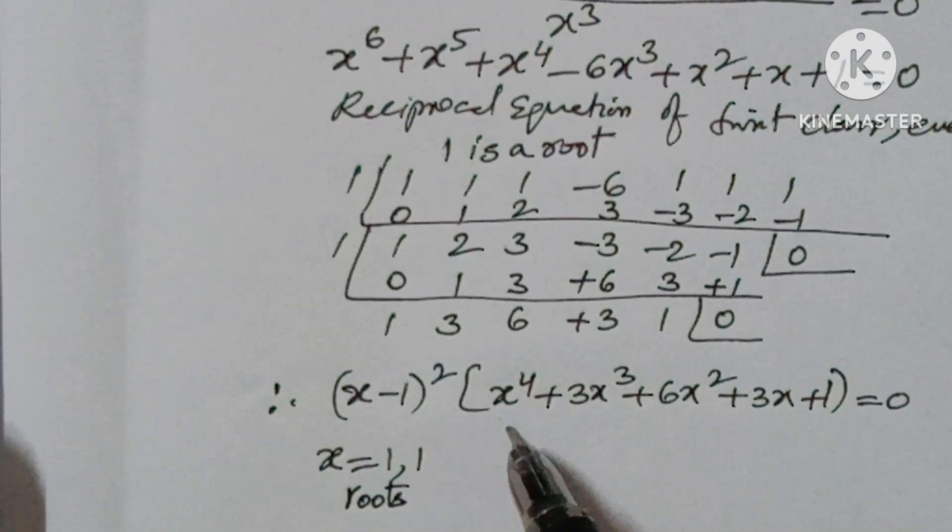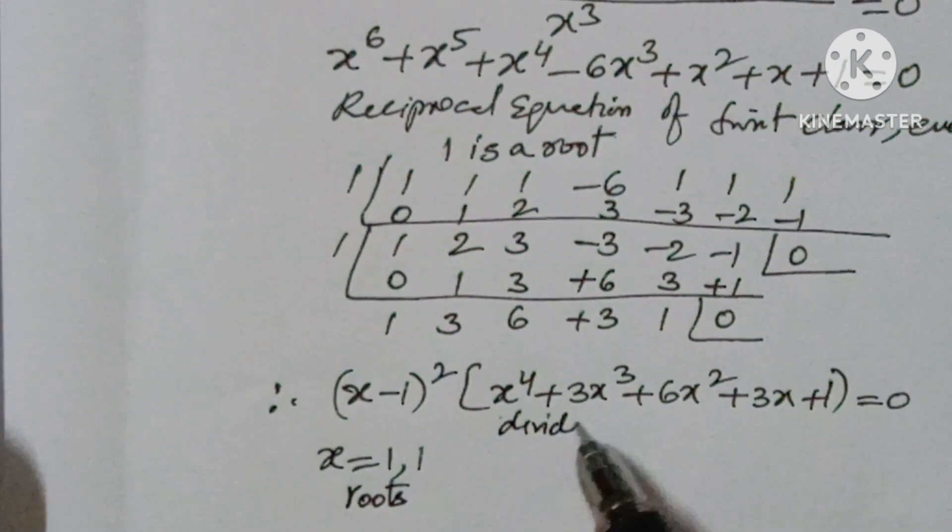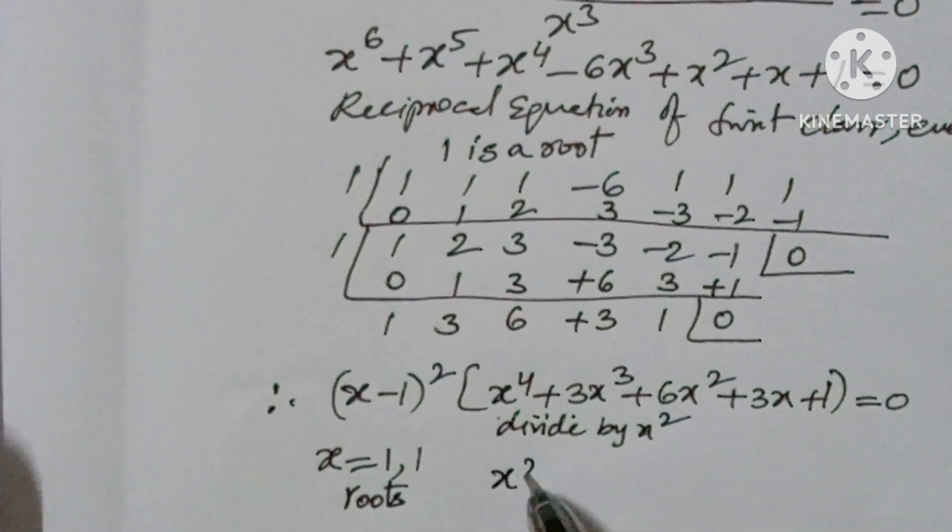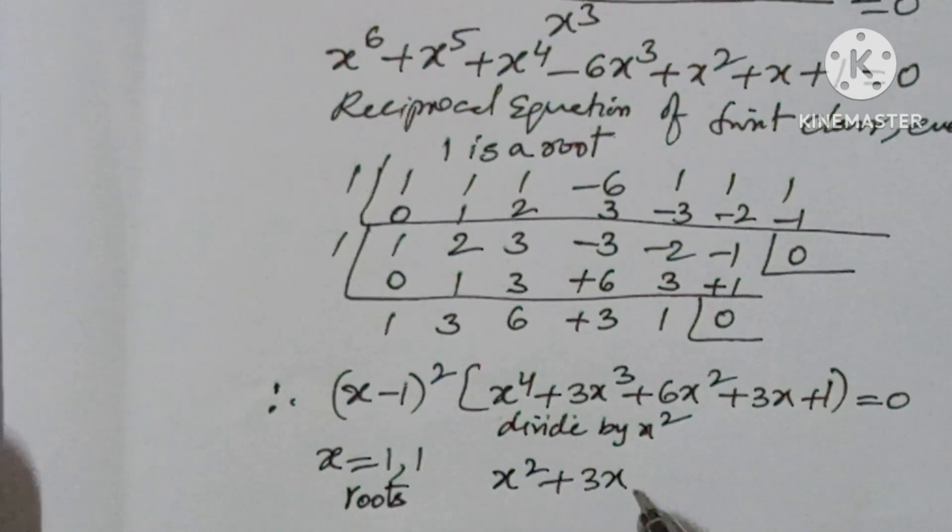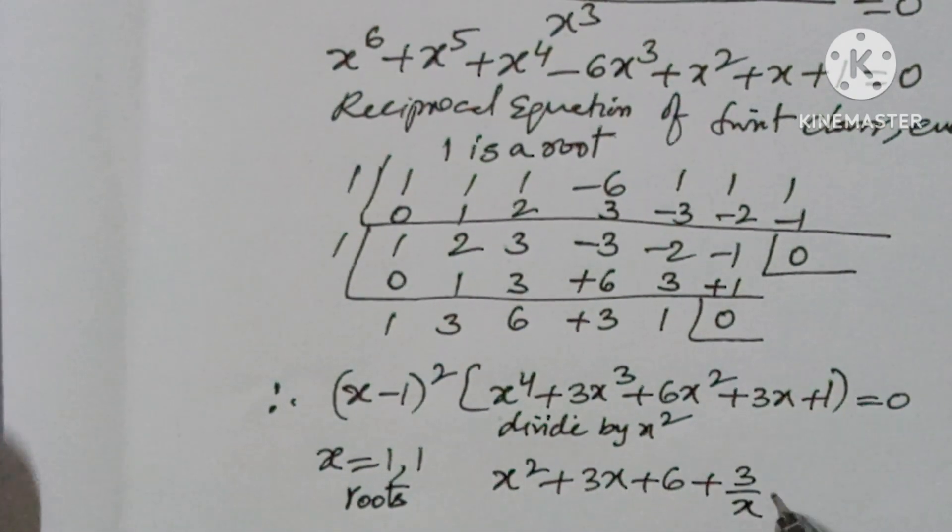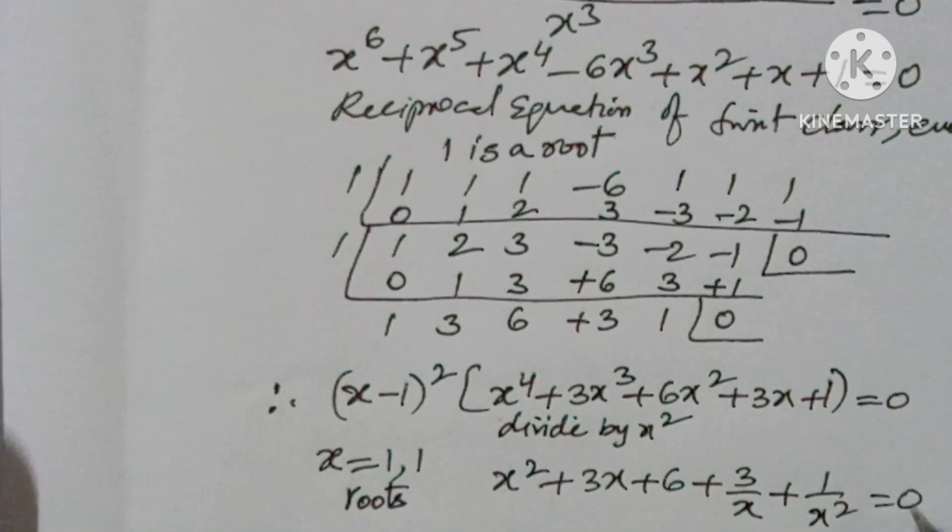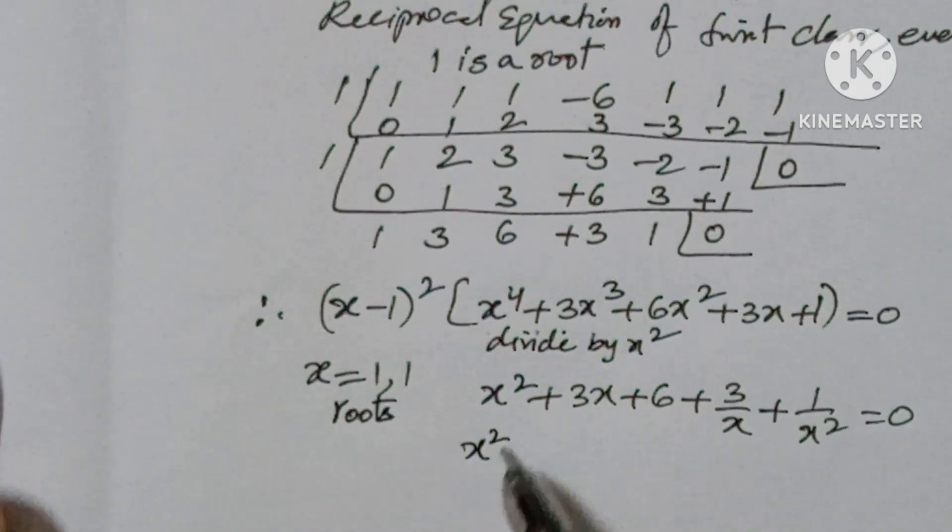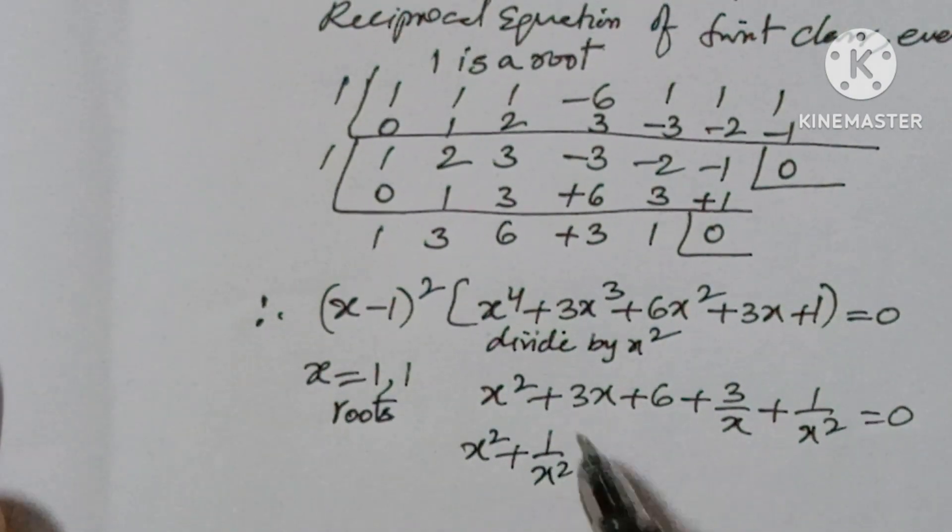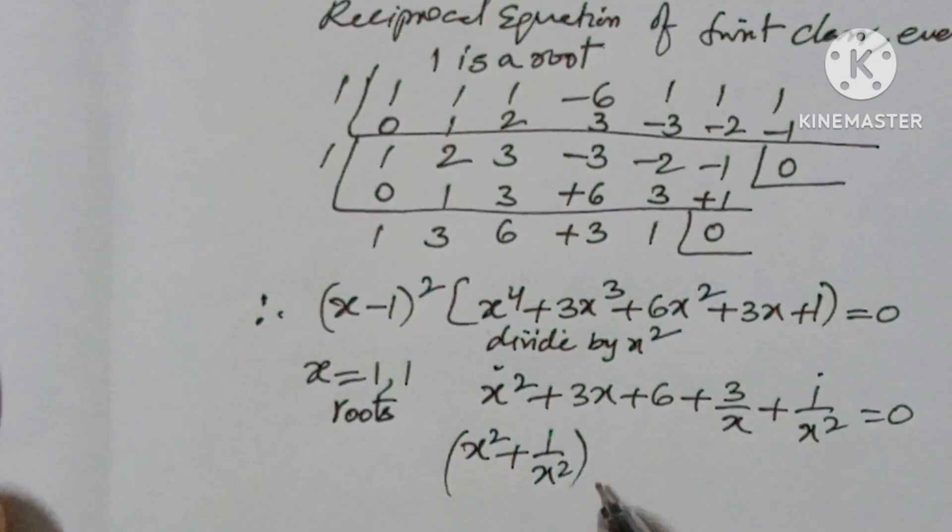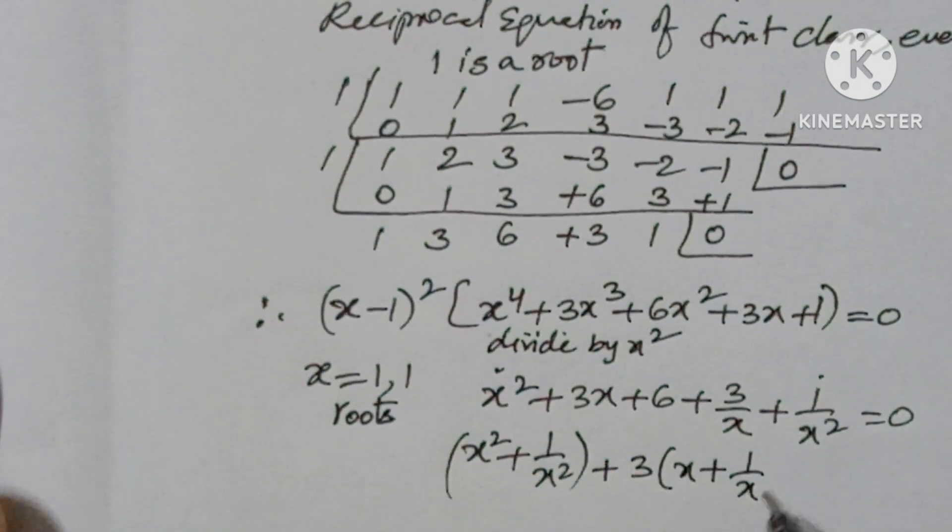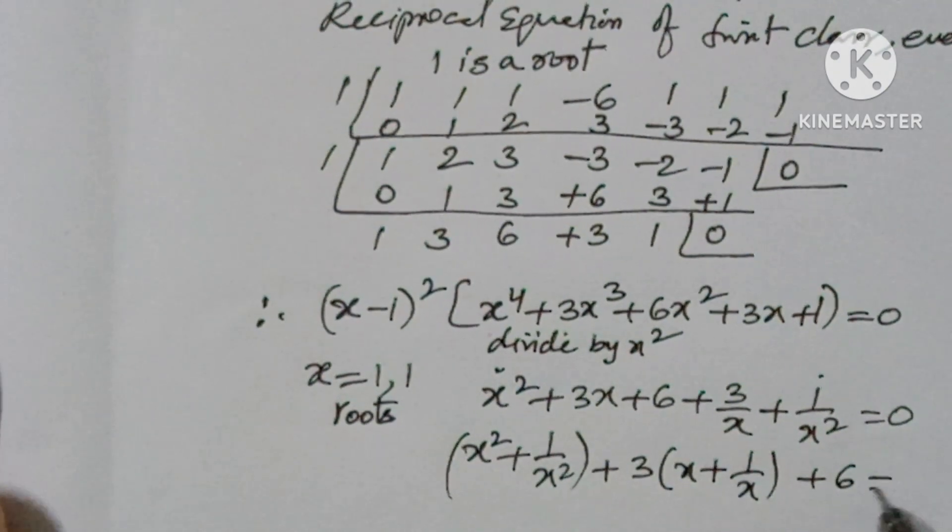Dividing by x squared: x squared plus 3x plus 6 plus 3 by x plus 1 by x squared equal to 0. Taking factors: (x squared plus 1 by x squared) plus 3(x plus 1 by x) plus 6 equal to 0.